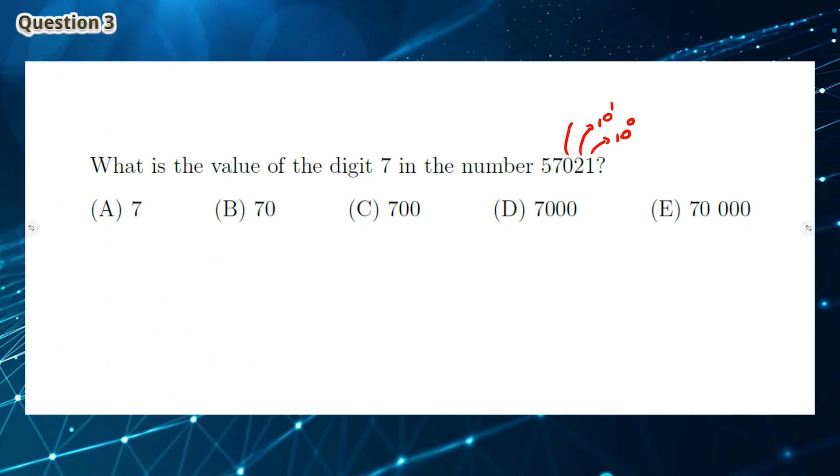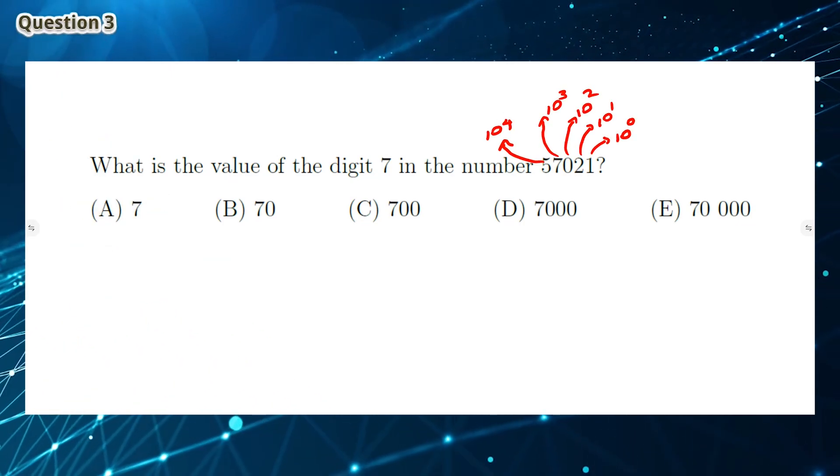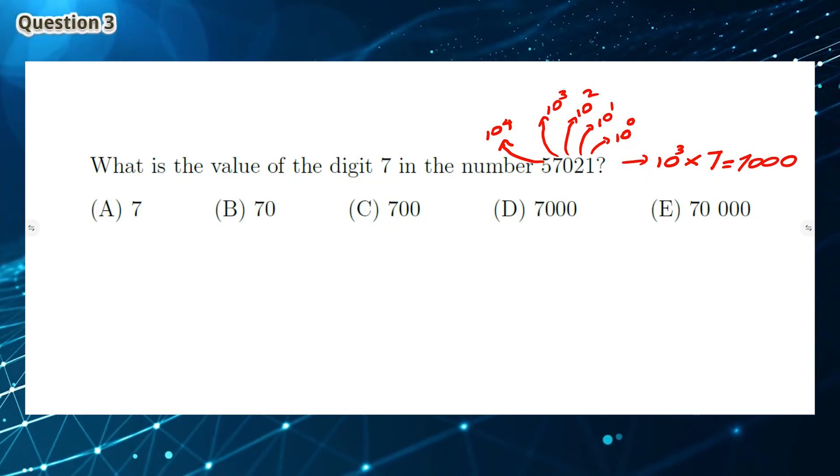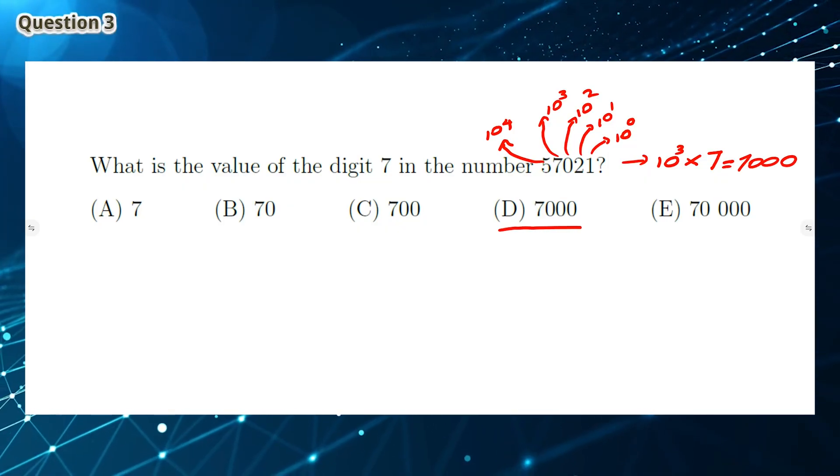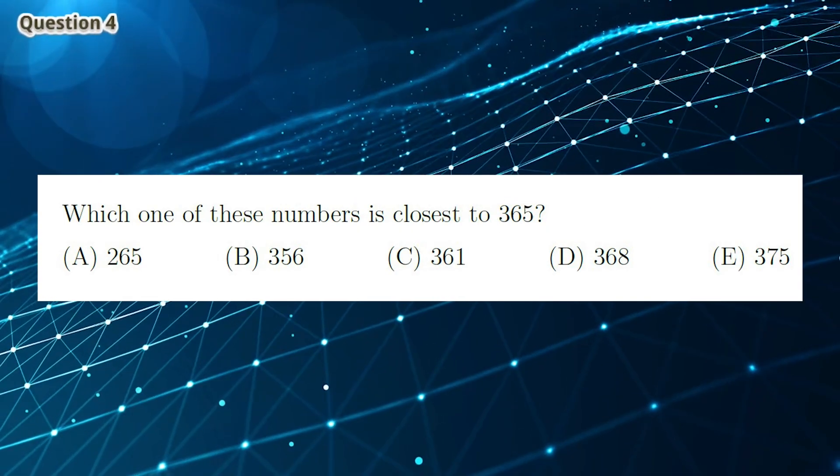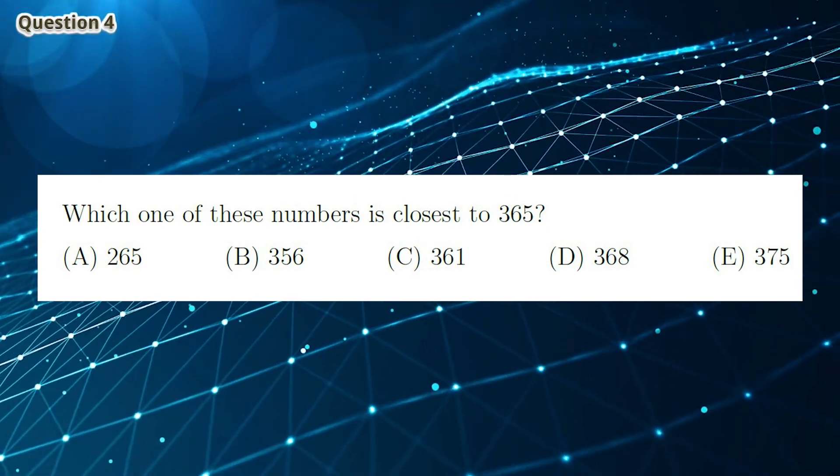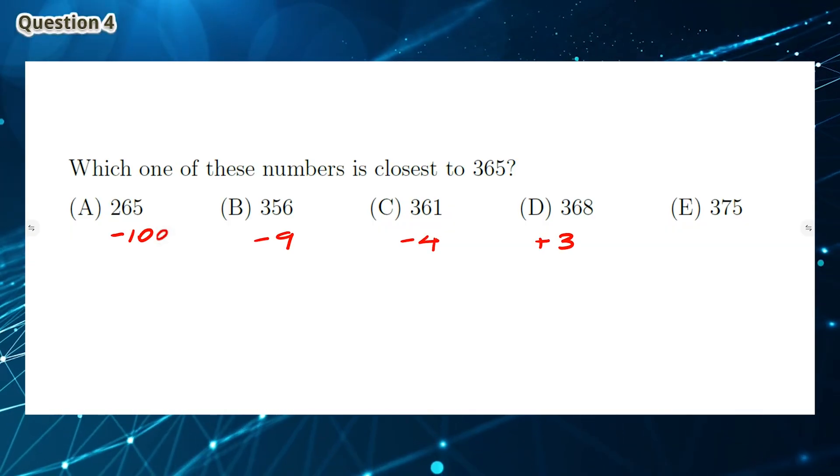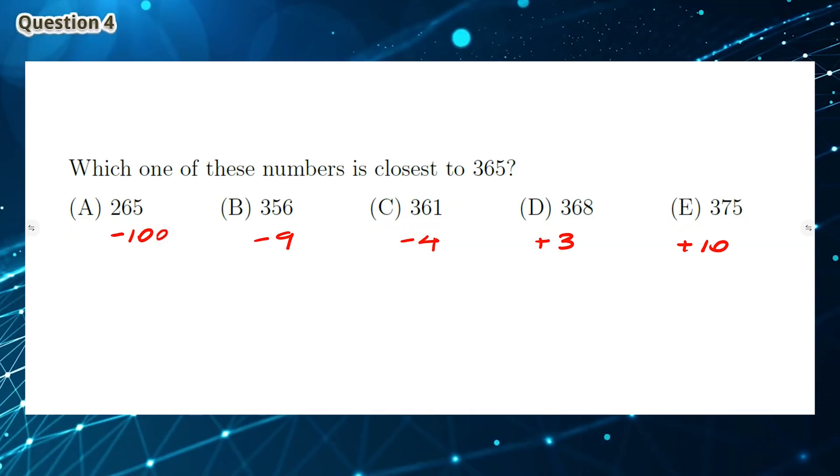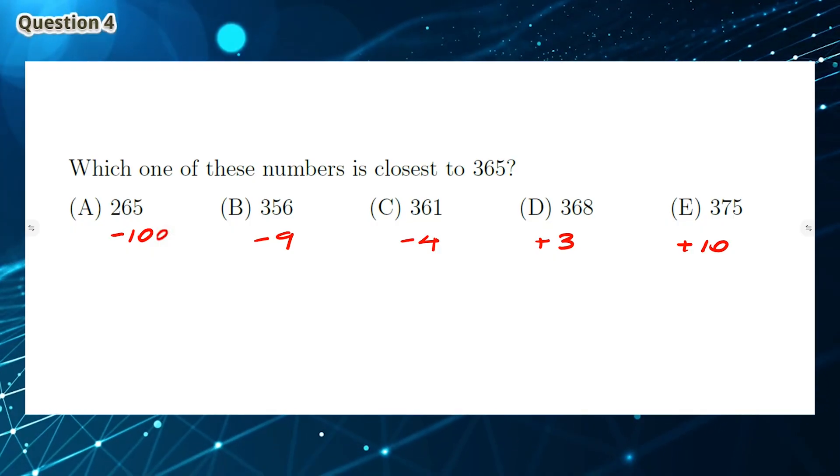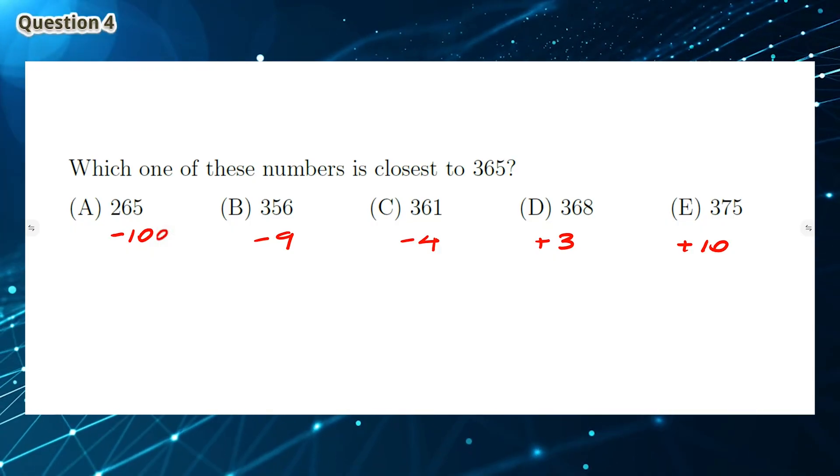Question 3: The digit 7 is in the thousands place, so it has a value of 7000, which means the answer is D. Question 4: If you look at each answer, we find that option D is closest to 365, only being 3 places away. This means the answer is D.